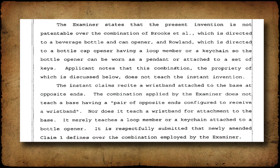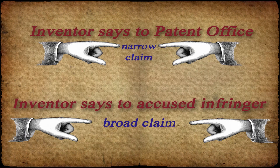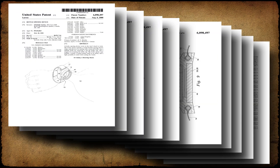For most non-attorneys, it is not critical to be able to spot a file history estoppel issue in any particular file history. However, it is critical to understand what they are. I am going to use a simple patent to show how the file history estoppel issue arises, and how it is later used as a defense in an assertion of the claims of that patent.